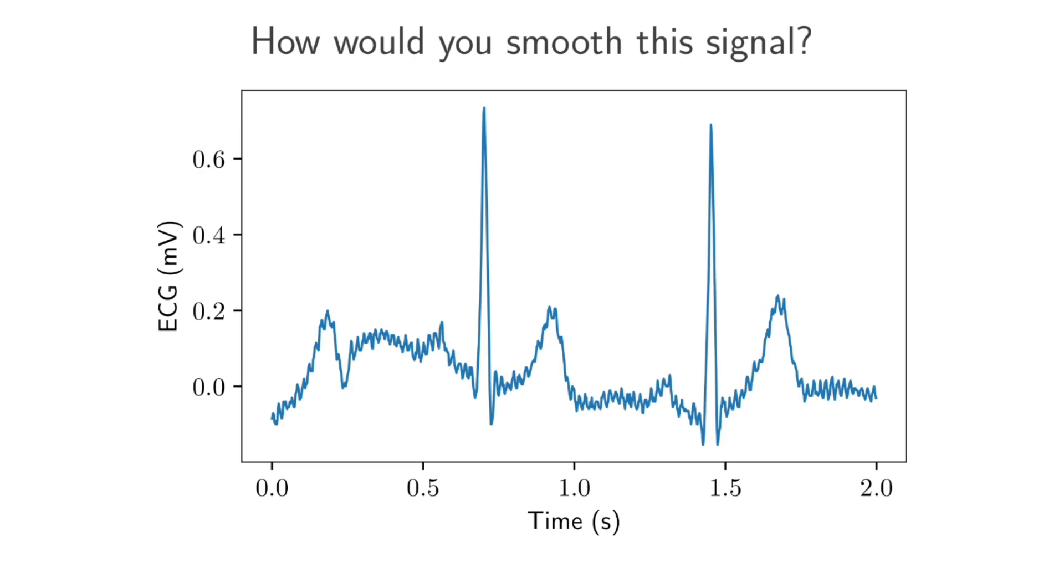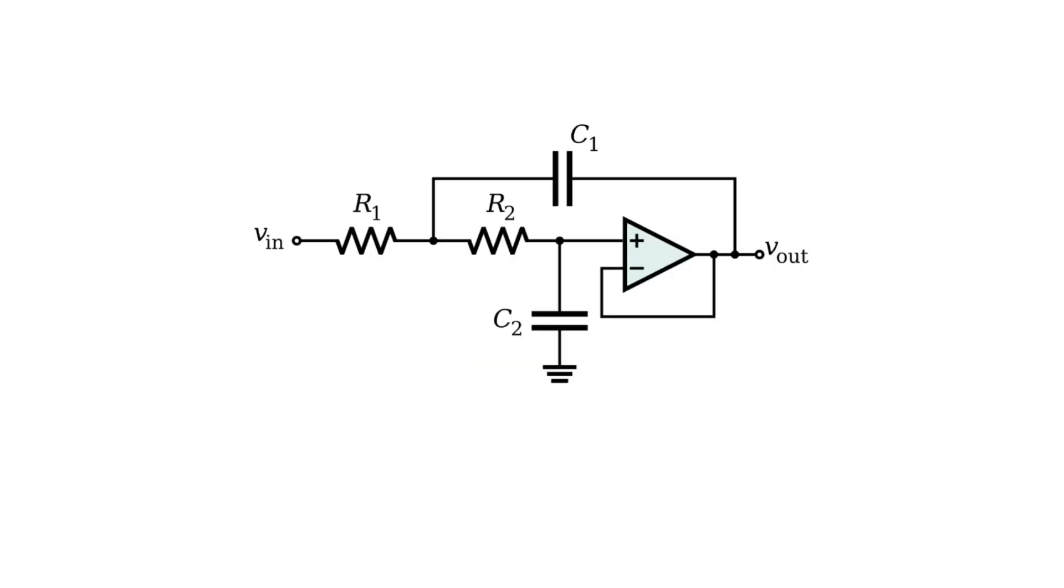I want to process the signal to smooth it. How would you do it? One option is to use a low-pass filter. We generate the signal, go into a lab, and build a low-pass filter. This is a picture of a Sallen-Key circuit that is a low-pass filter - I looked it up on Wikipedia.